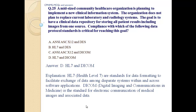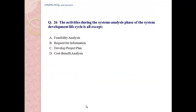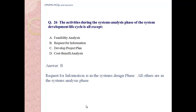Question number 26: The activities during the system analysis phase of the system development life cycle include all except: A) Feasibility analysis, B) Request for information, C) Development project plan, D) Cost-benefit analysis. Answer B: Request for information. Request for information is in the system design phase; all others are in the system analysis phase.